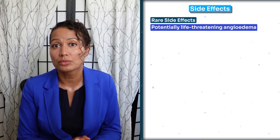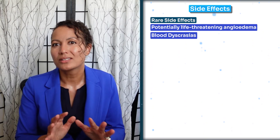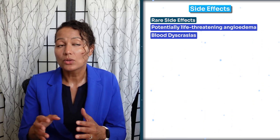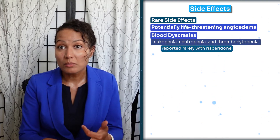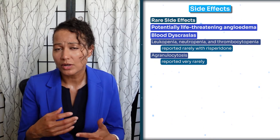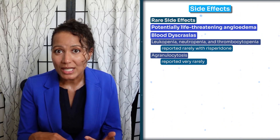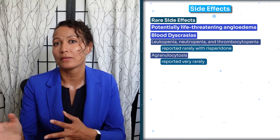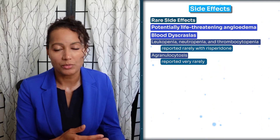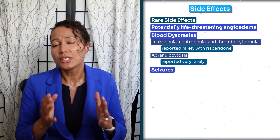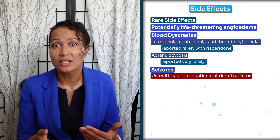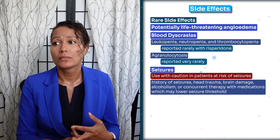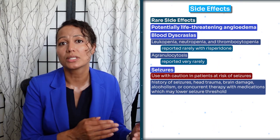Another rare side effect is blood dyscrasias — abnormalities in blood levels — another reason to get blood levels checked regularly. These can include leukopenia, neutropenia, thrombocytopenia, and agranulocytosis, which are abnormalities in various white blood cells and platelets. If you notice increased susceptibility to infections or easy bruising or bleeding, alert your provider and get blood levels checked. Seizures can also occur and Risperidone should be used with caution in patients with seizure disorder, including those with head trauma, brain damage, alcoholism, or concurrent therapies that lower the seizure threshold.